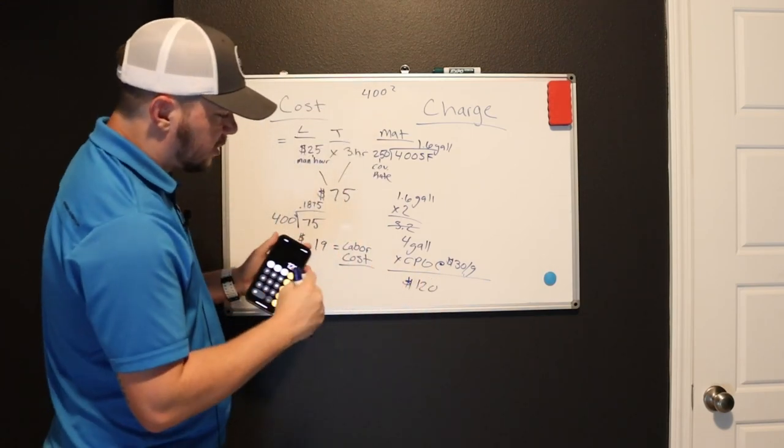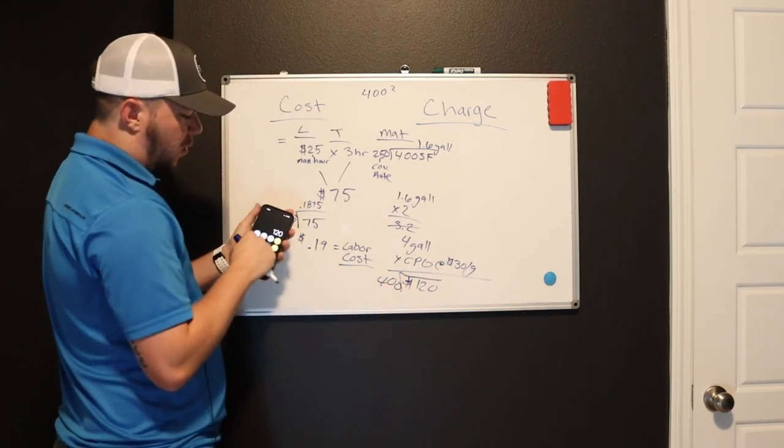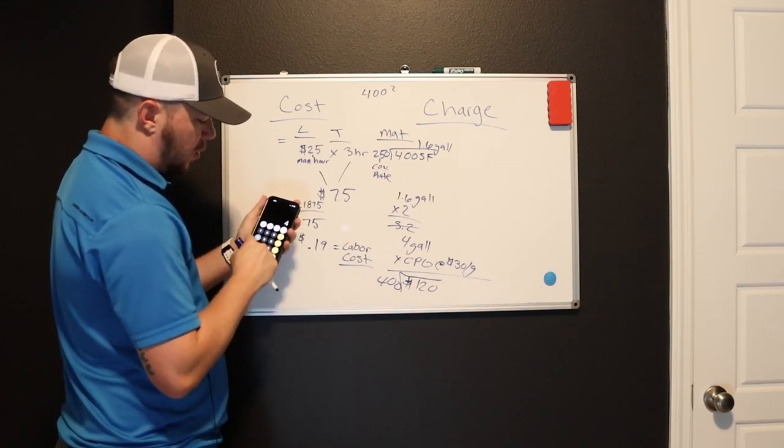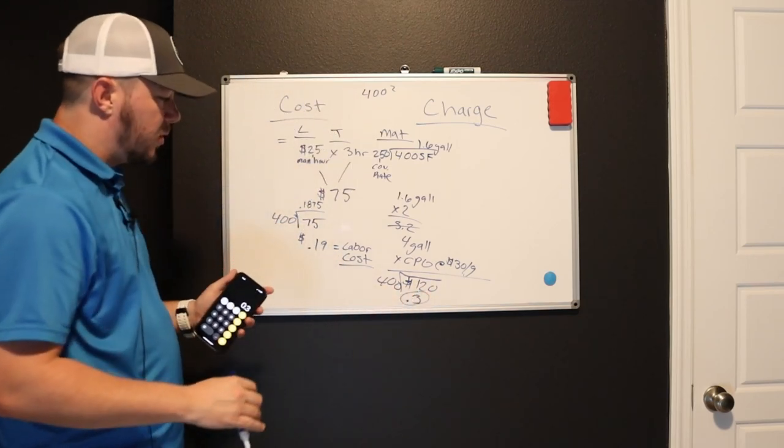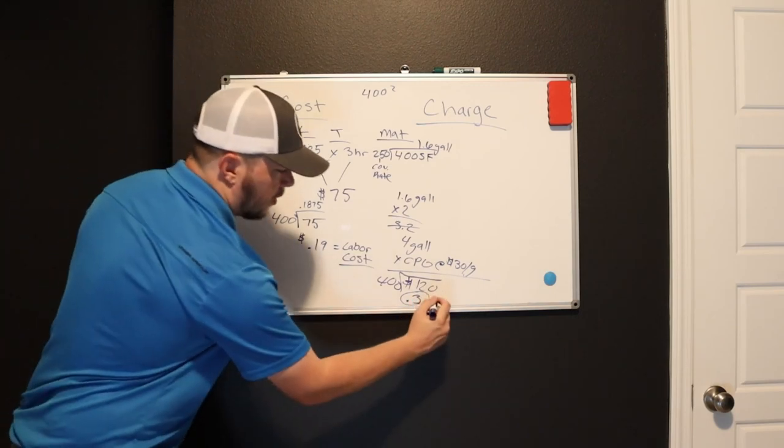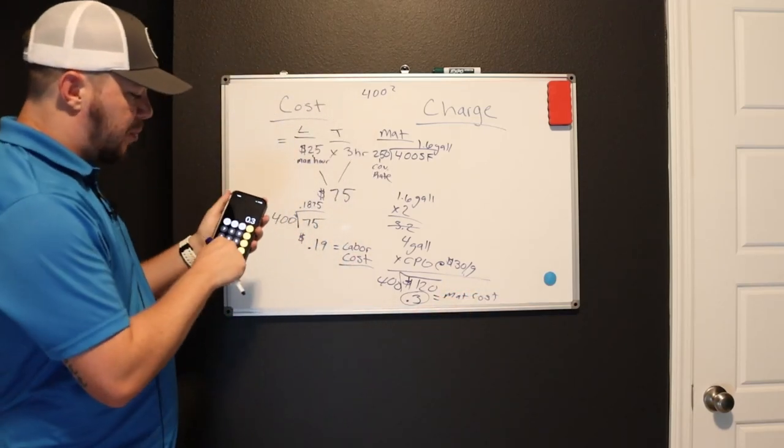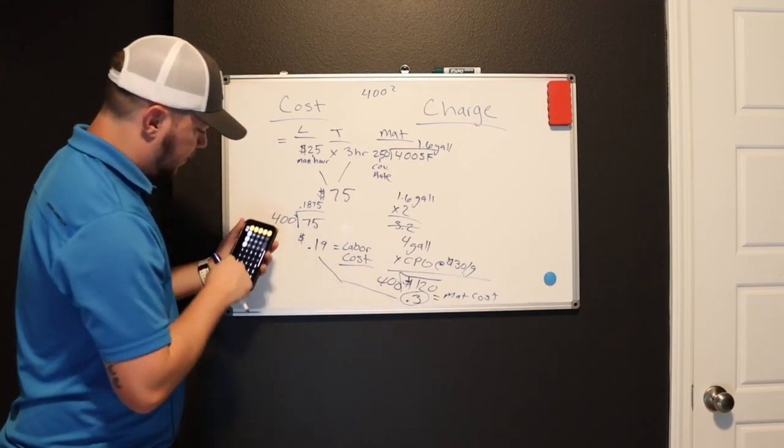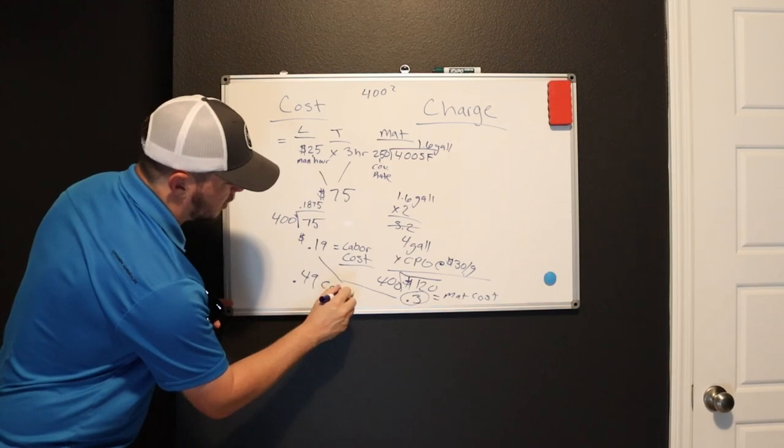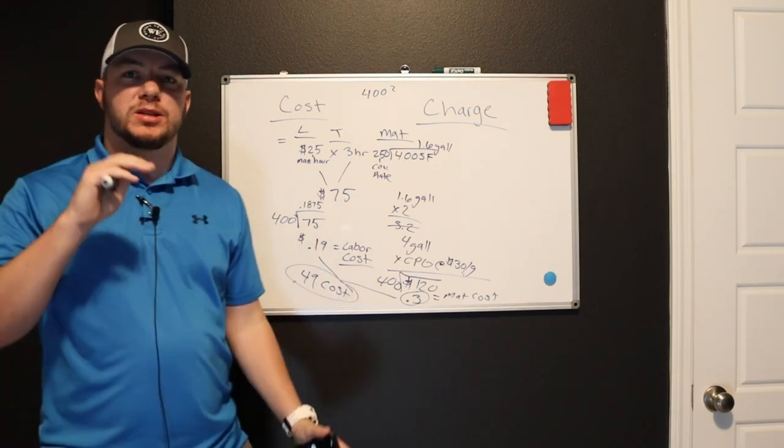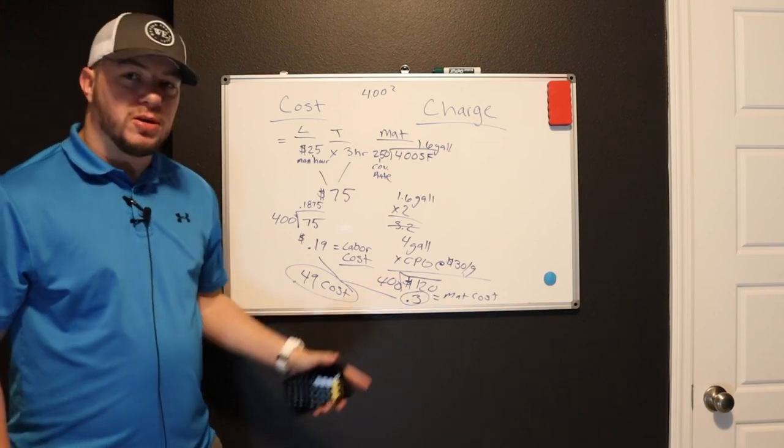So once you get that $120, you want to divide that $120 by your 400 square foot of your room as well. So 400 into 120, so $120 divided by 400 is $0.30. $0.30 a foot in material, and you're actually $0.19 a foot on labor equals material cost. Remember, this is all still cost.